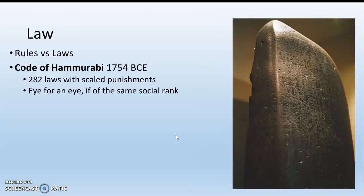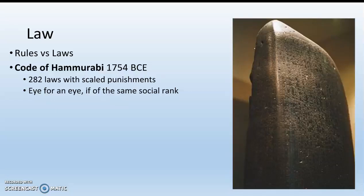We have the first codified — meaning written down — laws, called the Code of Hammurabi. You probably learned about it in middle school. The Code of Hammurabi was written in 1754 BCE and has 282 different laws with scaled punishments. Basically it's an eye for an eye if of the same social rank. If a rich person kills a rich person's son, that rich person gets to kill your son. But if a rich person kills a poor person's son, you probably just pay a fine. It's not very fair, but at least it's written down — rules exist, even if they only treat people equally within the same social rank.